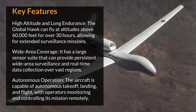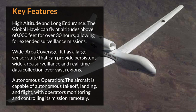Key features. High altitude and long endurance: The Global Hawk can fly at altitudes above 60,000 feet for over 30 hours, allowing for extended surveillance missions. Wide area coverage: It has a large sensor suite that can provide persistent wide area surveillance and real-time data collection over vast regions. Autonomous operation: The aircraft is capable of autonomous takeoff, landing, and flight, with operators monitoring and controlling its mission remotely.